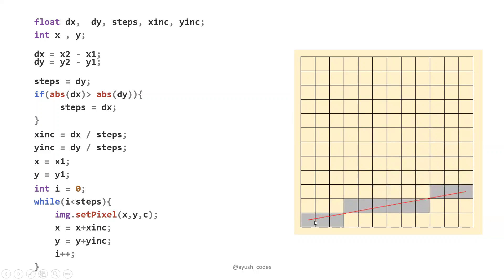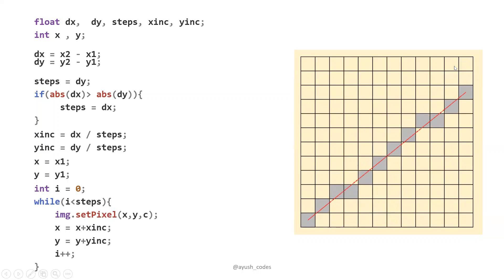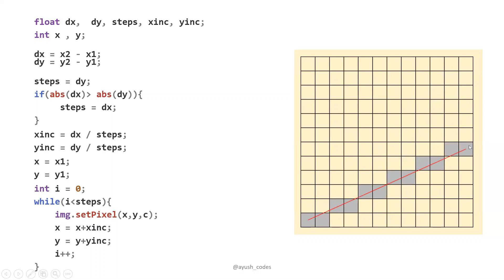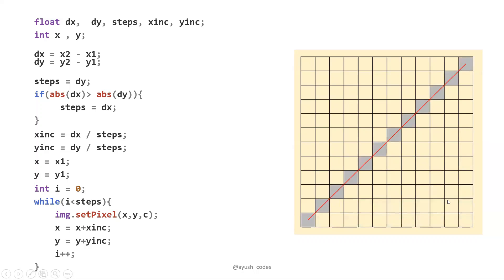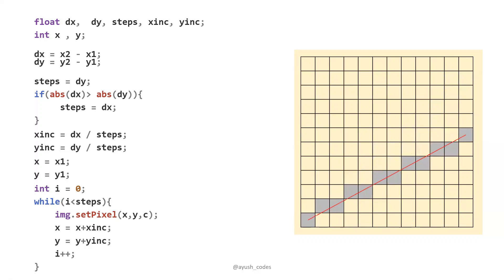For example, in this animation you can see that if the x value and y value are the same, the line is at a diagonal — at 45 degrees — but if dy is lesser, then the line goes on decreasing towards the horizontal plane. Now it's time to implement this algorithm using Qt Creator.